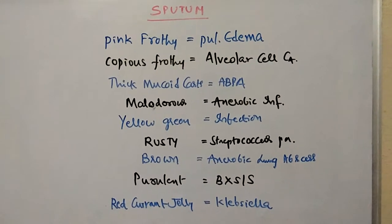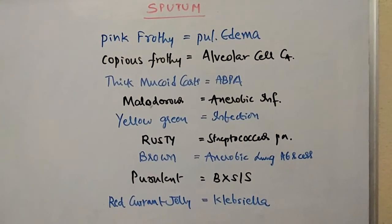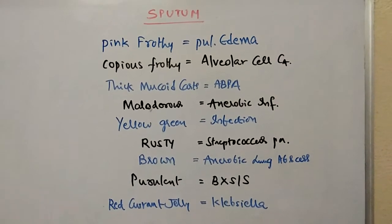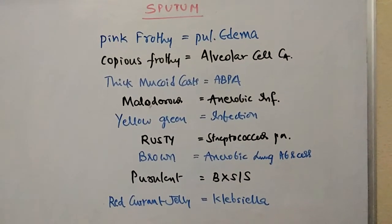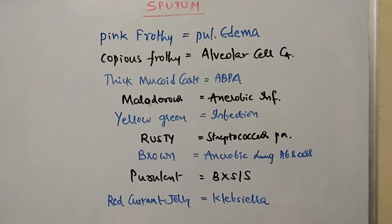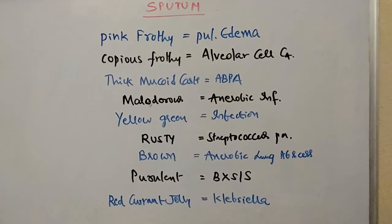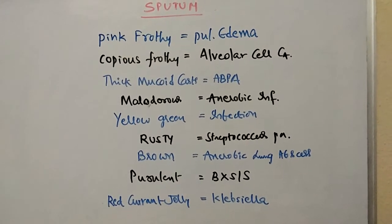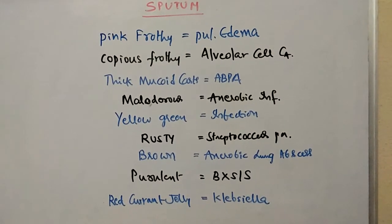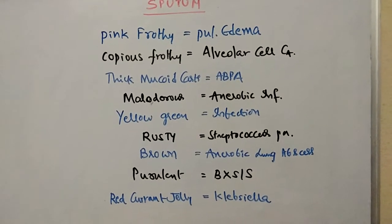When the sputum is pink and frothy, it is more in favor of pulmonary edema. Copious frothy sputum is seen in alveolar cell carcinoma or bronchoalveolar cell carcinoma. Thick mucoid casts are seen in allergic bronchopulmonary aspergillosis. Malodorous, i.e., foul-smelling sputum, is seen in anaerobic infections.